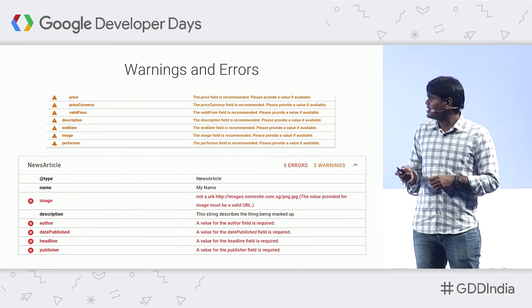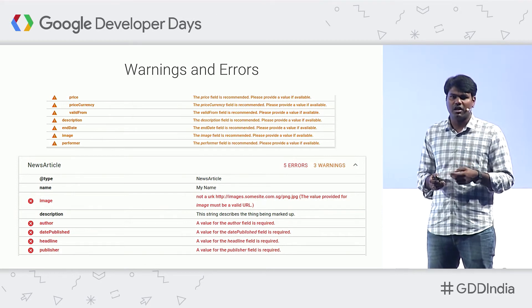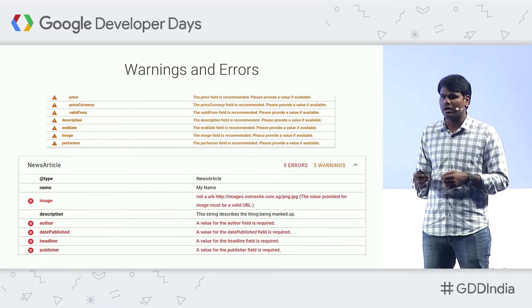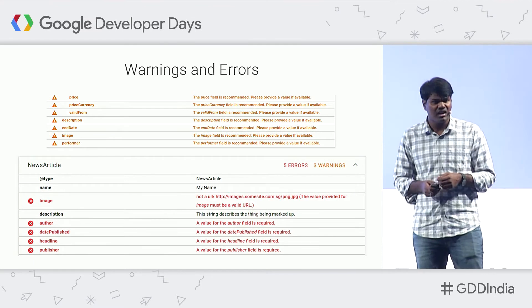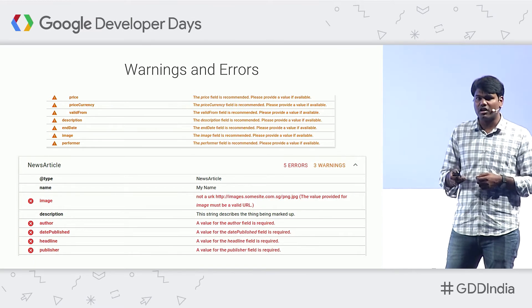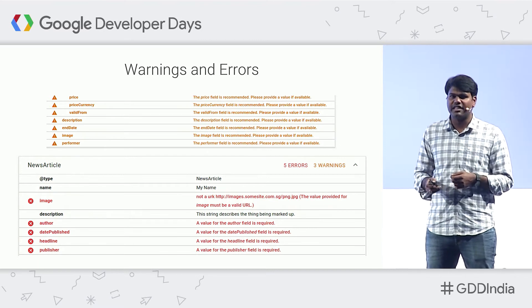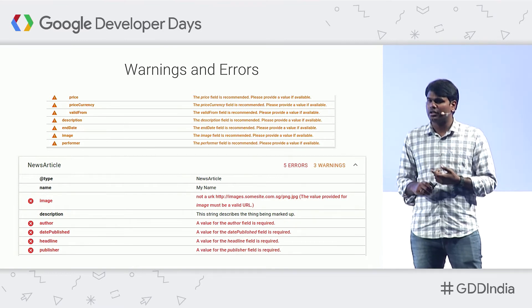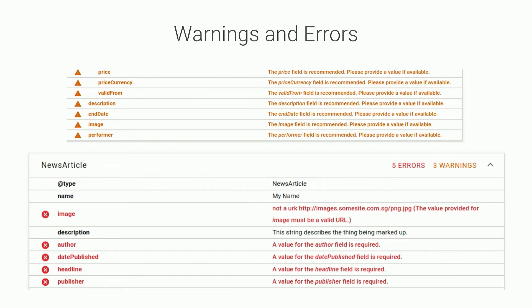There are generally two types of errors you'll notice. One type is when your code is not compatible with schema.org vocabulary or there's a syntax issue. The other type is when your code is not compatible with Google search features — for example, in the Google for Jobs feature, it's a requirement to add the address. So if you're listing a job for an accountant in Bangalore but don't provide the exact address, we won't validate that code and it won't appear in Google for Jobs rich snippets.